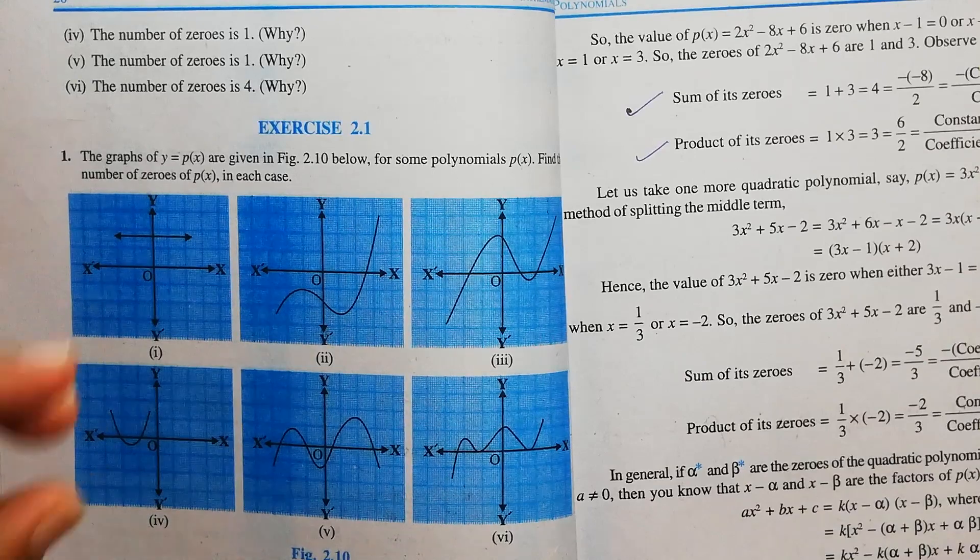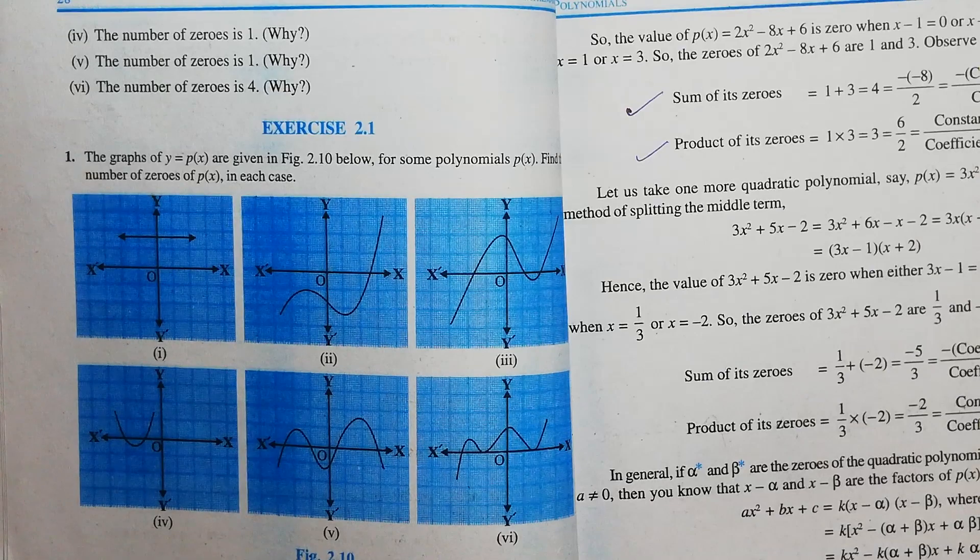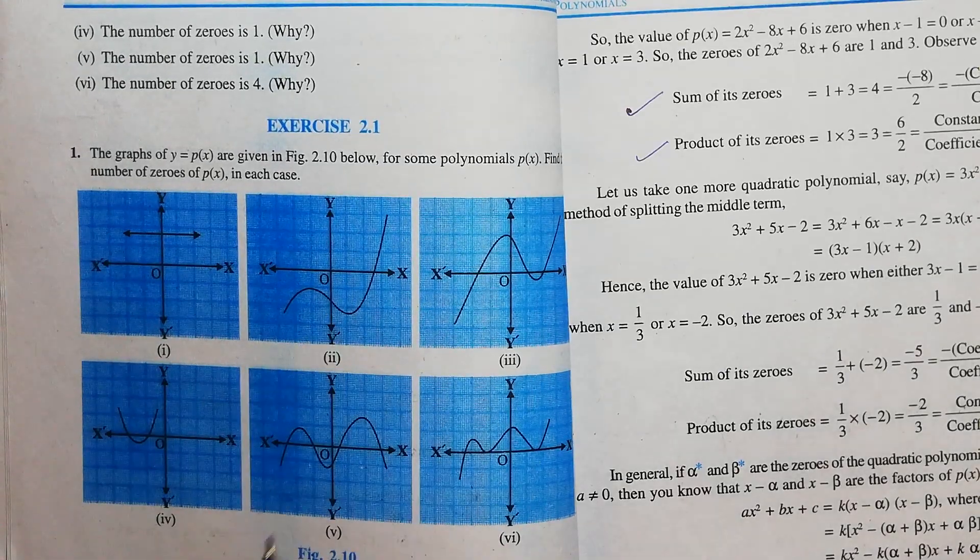So, how many points the graph intersects the x-axis? That is the number of zeros of the polynomial. If the graph intersects at only one point, it is called a linear polynomial.